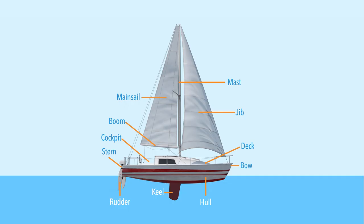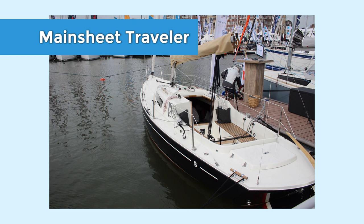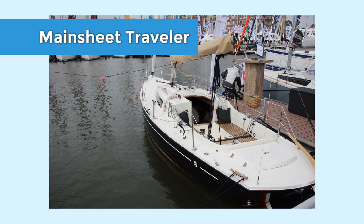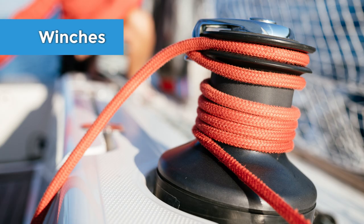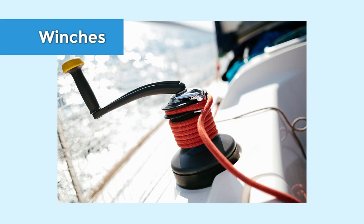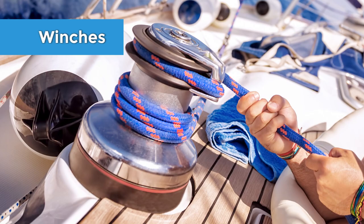There are some other parts I wanted to point out quickly. The mainsheet traveler — the mainsheet is attached to the boom and it controls the angle of the mainsail to the wind. The mainsheet traveler is ordinarily a rail which helps you set that angle. Then we have winches, which are spools used to trim your lines and sheets easily — they give you leverage so you don't have to haul in all your sheets by yourself. By the way, sheets are just ropes — ropes that control sails.